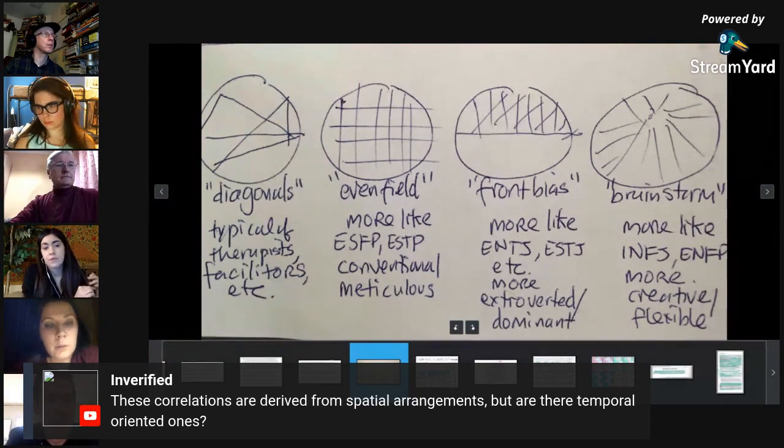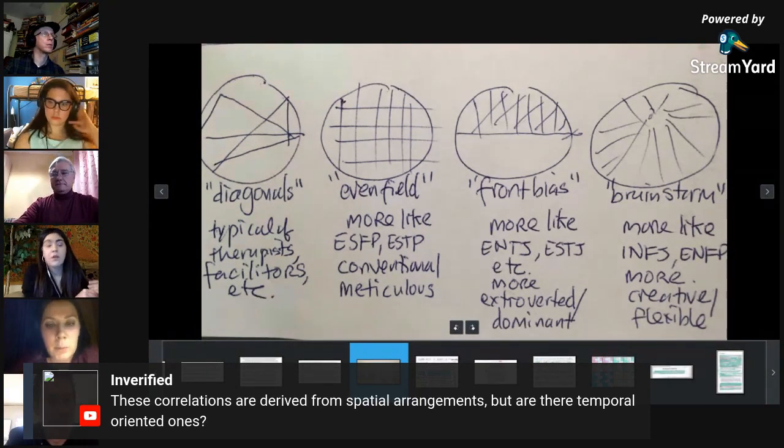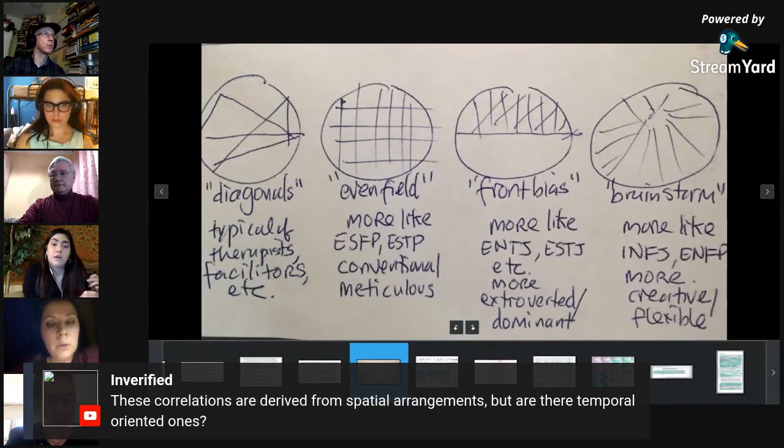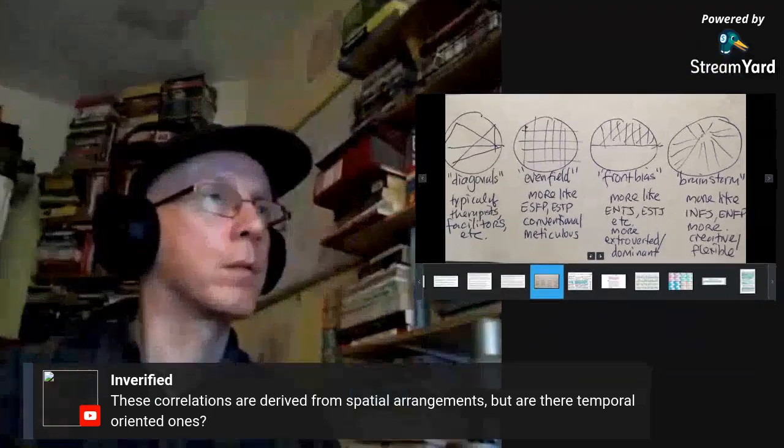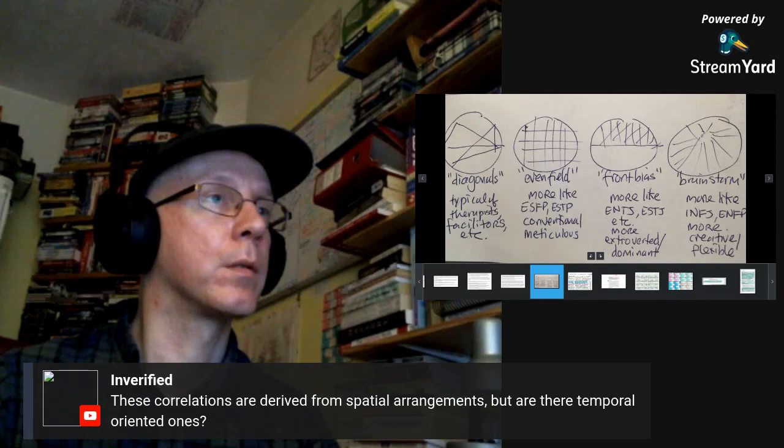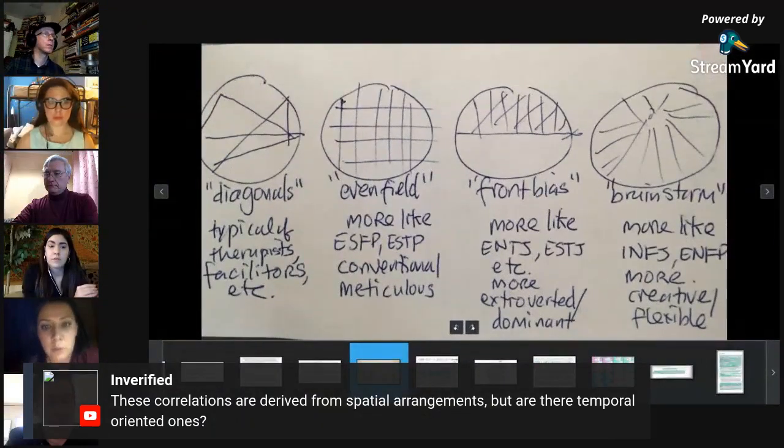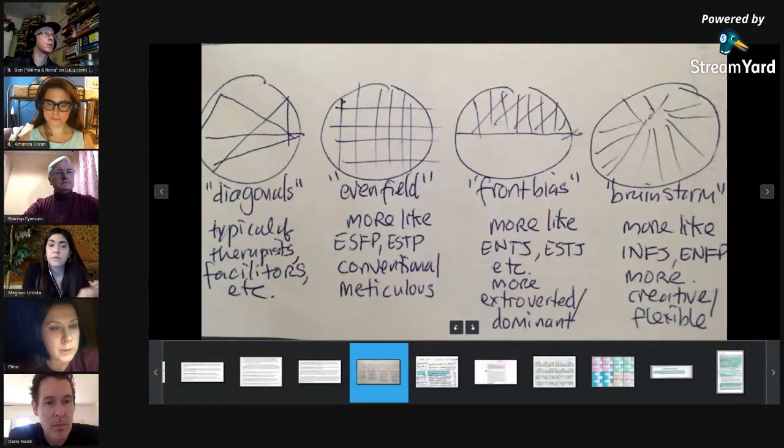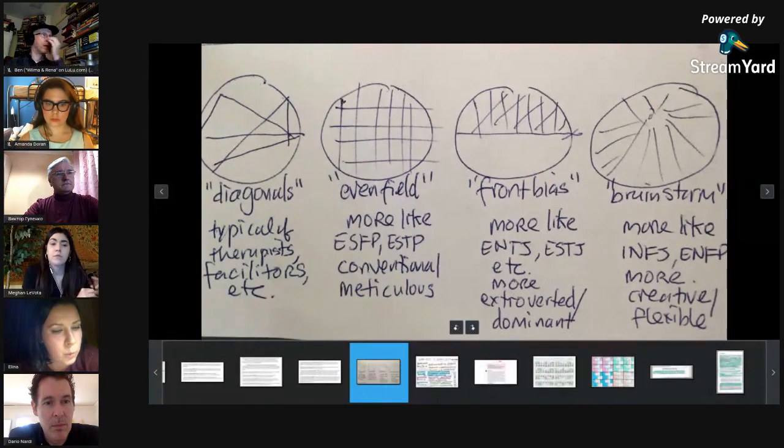Victor is asking about what he found as a contradiction: initially you described Megan as the first type of personality, being creative and brainstorming, but you're also saying that she resembles the diagonal type which is harmonizing. So which one is it?